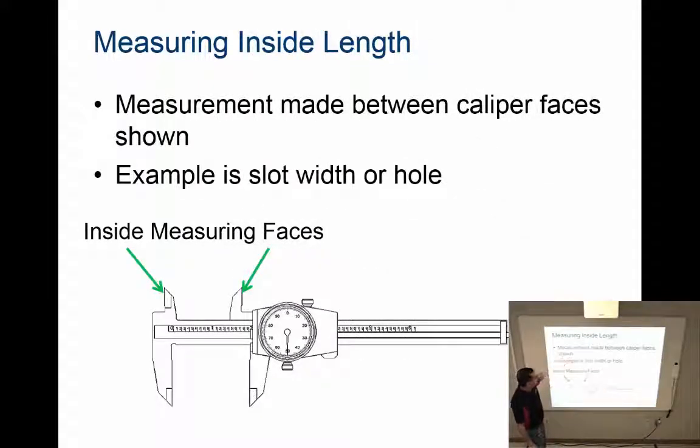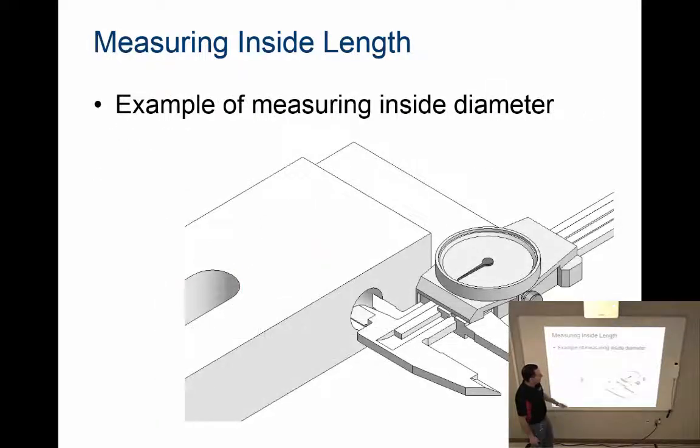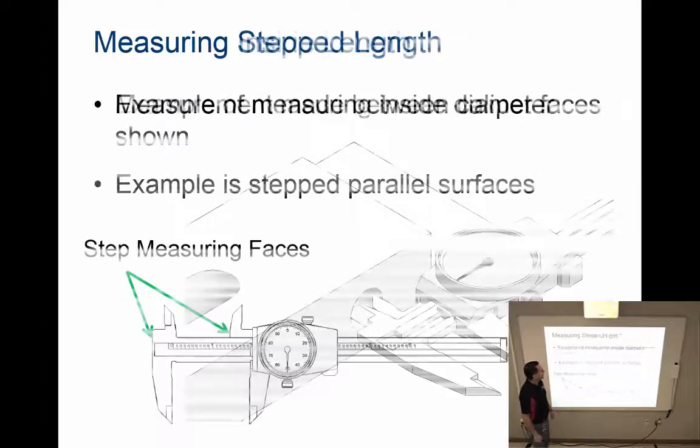I can also do inside length or inside diameter using the two measuring faces on the top of the prongs. If I have a hole or slot and want to get the diameter, I can use the inside faces touching where this diameter is, then read the measurement off the dial caliper.